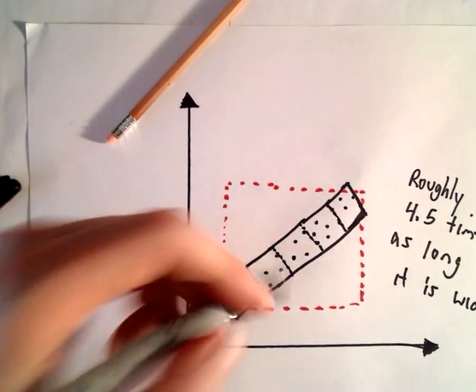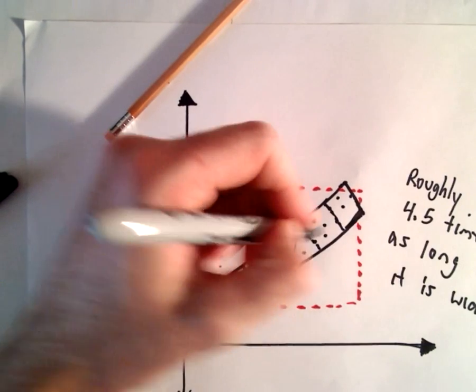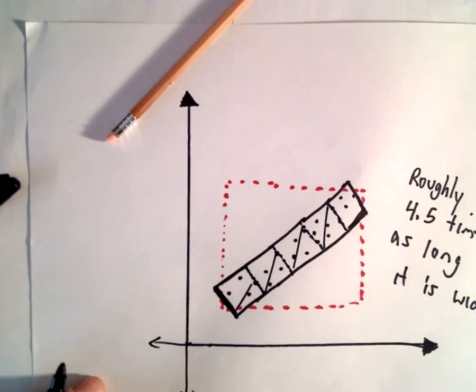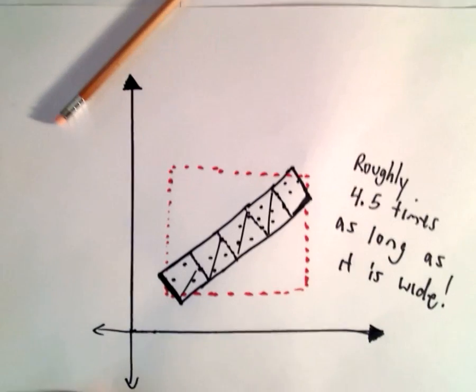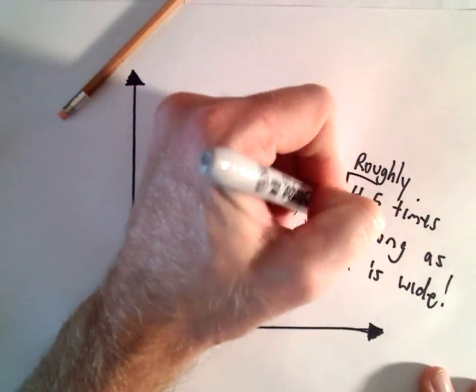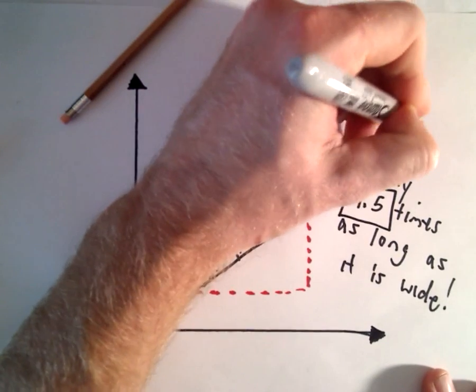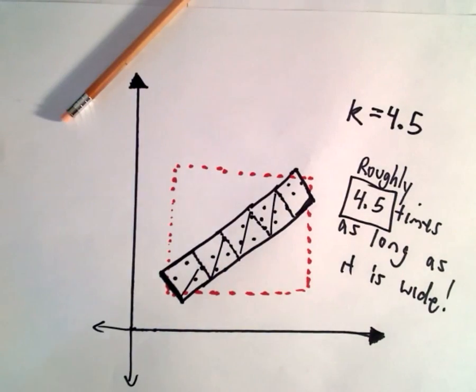So again, one square, two squares, three squares, four squares, and roughly another half a square. So it's 4.5 times as long as it is wide. That is going to be our k value. So k in this case equals 4.5, and that's what we're going to use in our formula.